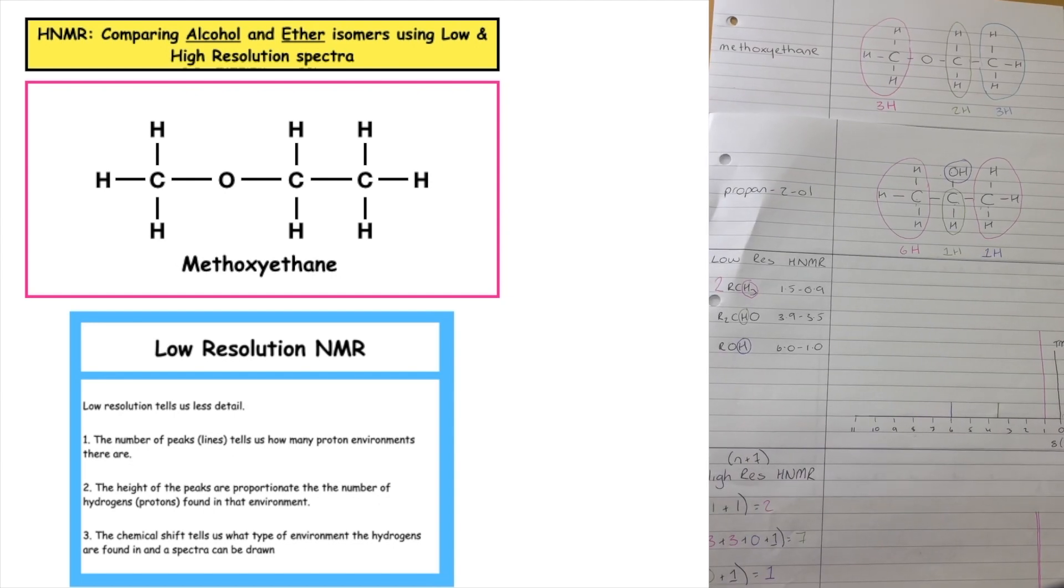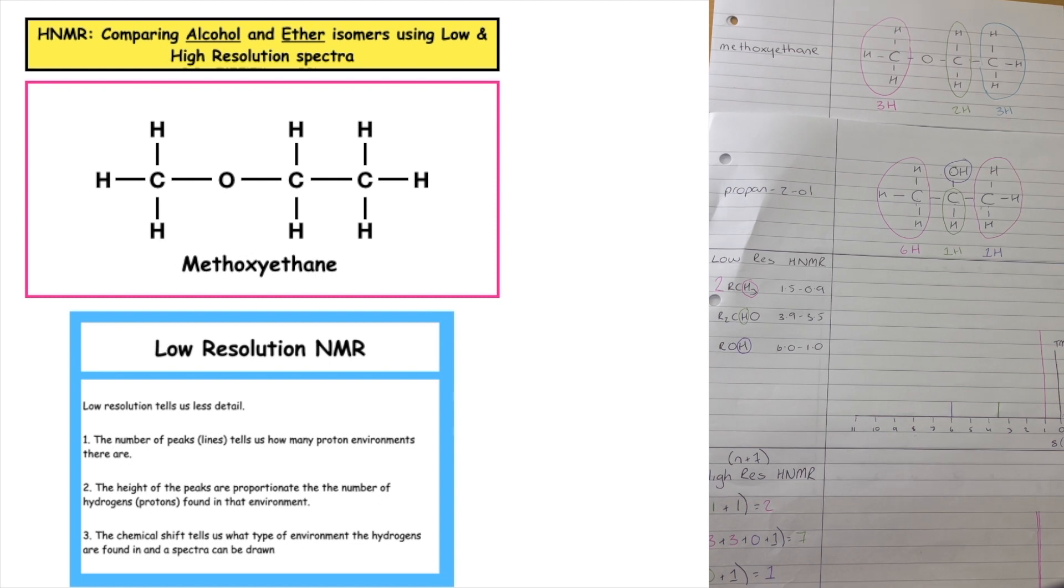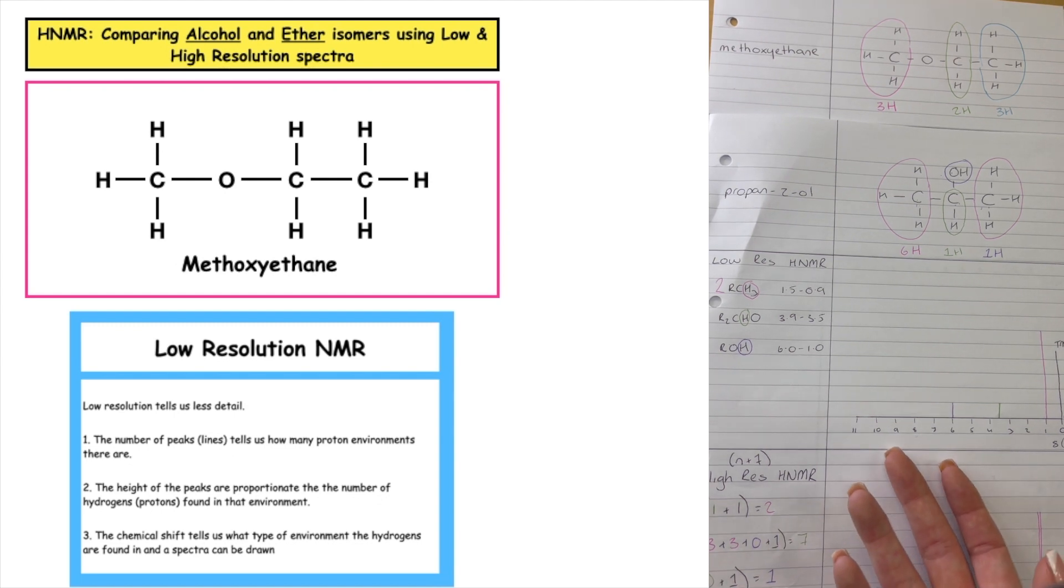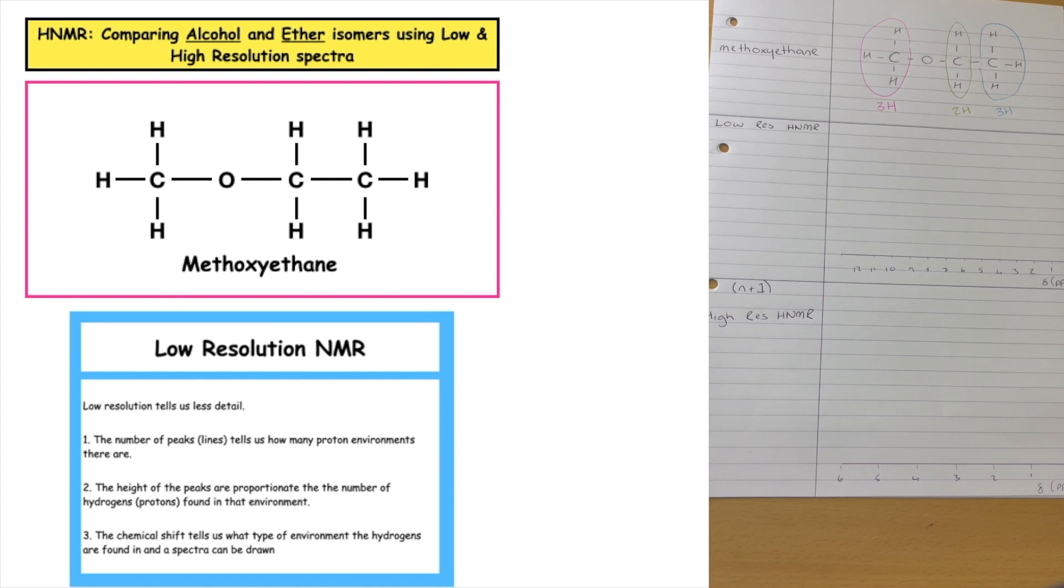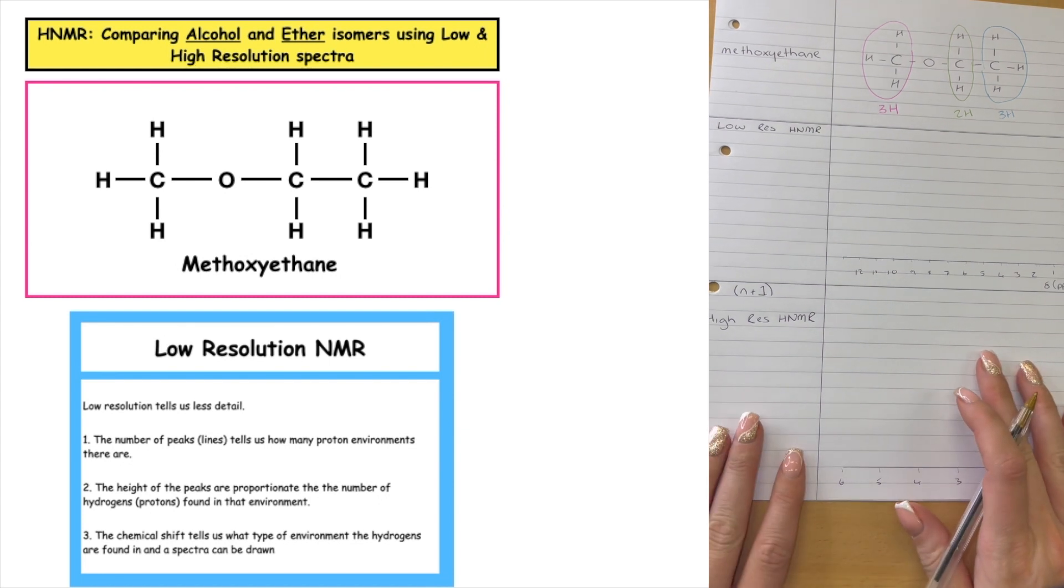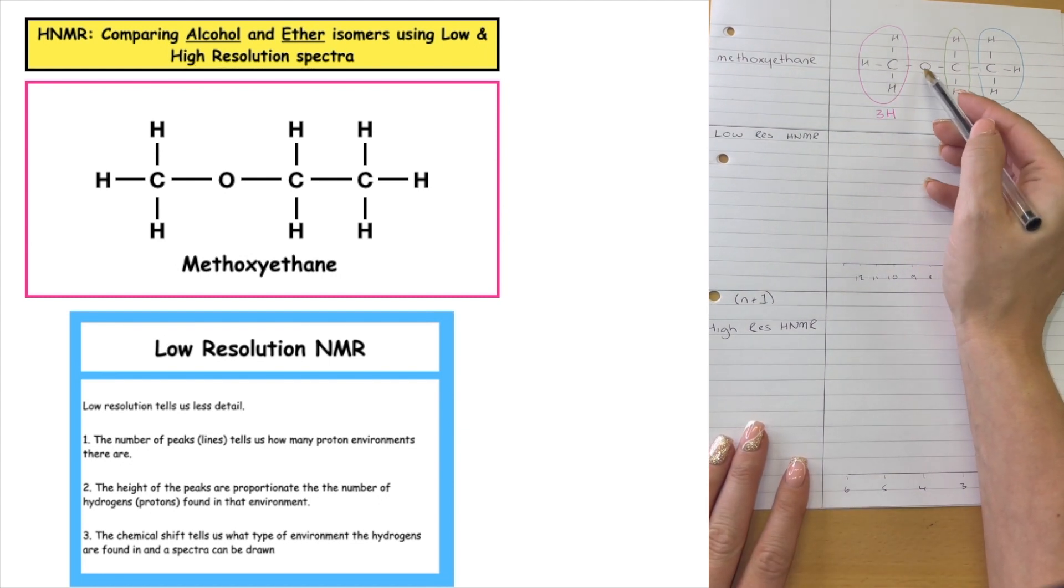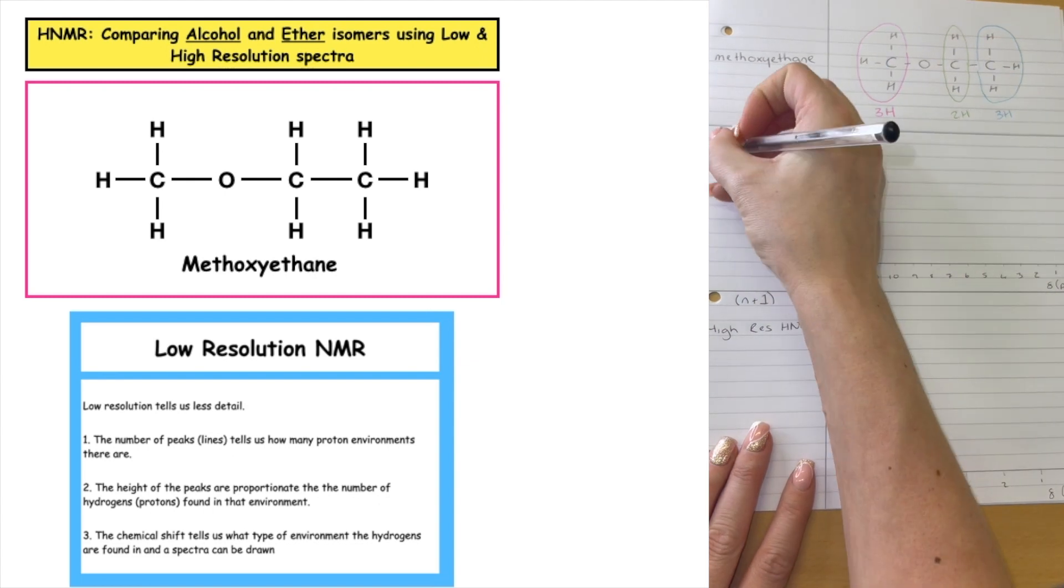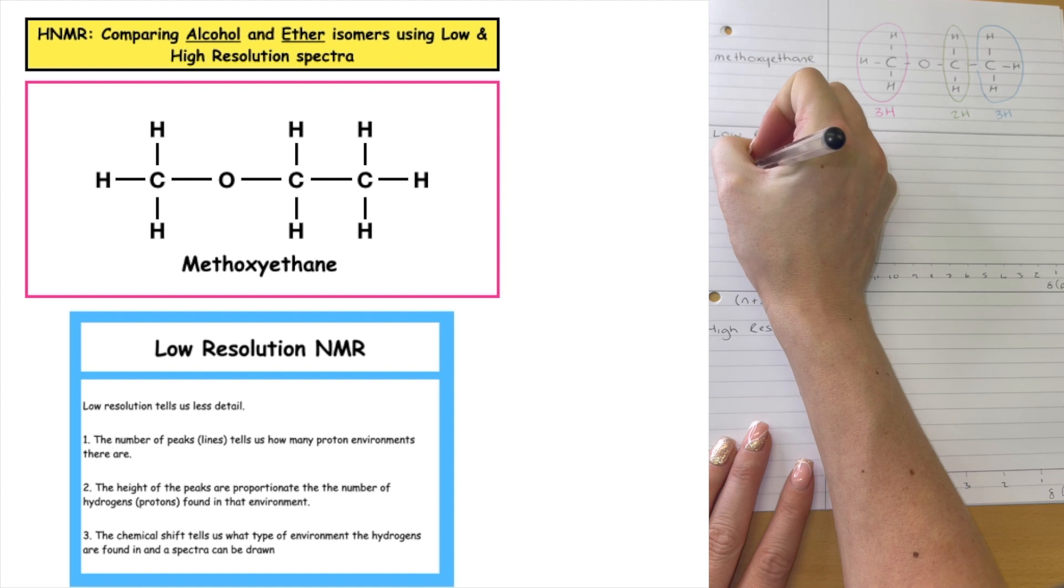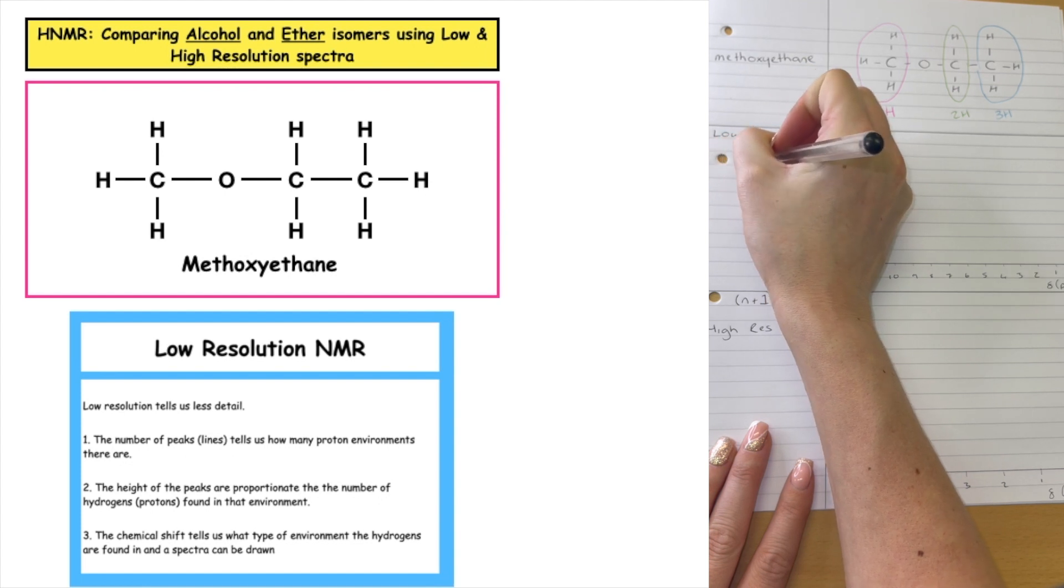So what we're going to do now is we are going to draw the low resolution HNMR for methoxyethane and we'll compare the spectra produced to the propane-2-ol, which we have already done in a previous video. So if I'm looking at this here, I have got a CH3 which is bonded to an O. Okay, so that would be written as CH3O dash.